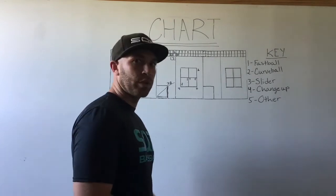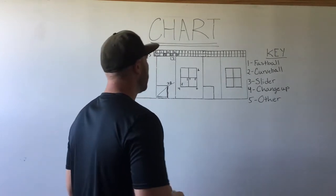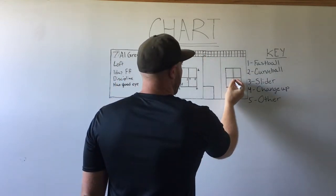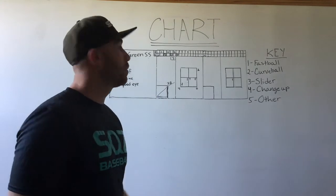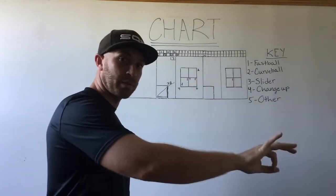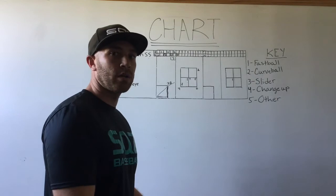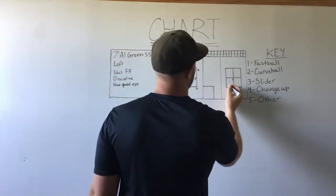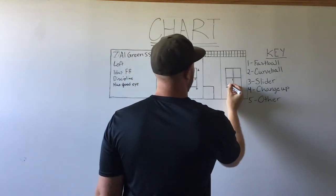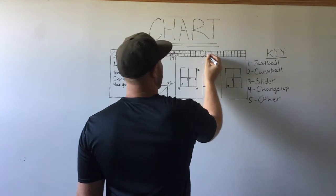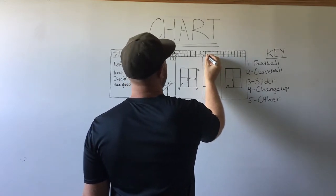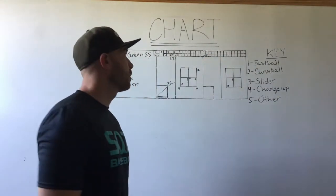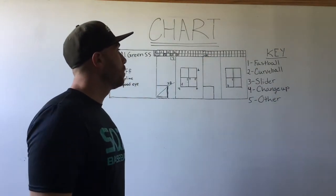Now let's take this information from Al's first at-bat and apply it to a second at-bat. We're going to start him off with an 0-0 breaking ball for a strike, then throw him a change-up — something that looks like a fastball — to hopefully throw off his timing a little bit. And let's say he pulls it back, so now we're ahead in the count.